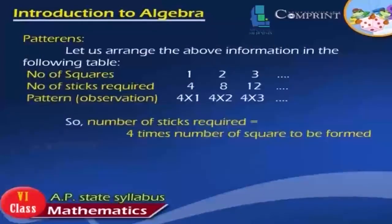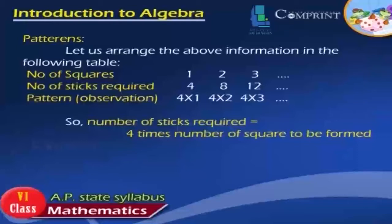Let us arrange the above information in the following table. Number of squares 1, number of sticks required 4, pattern 4×1. Number of squares 2, number of sticks required 8, pattern 4×2. Number of squares 3, number of sticks required 12, pattern 4×3, and so on. So, number of sticks required is equal to 4 times the number of squares to be formed.